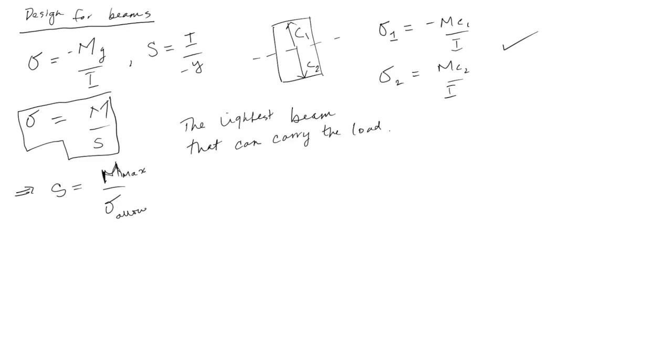you want the section modulus to be efficient such that if the section modulus goes up, that means the allowable stress goes down. And that's what you want. An efficient beam is one where given a constant maximum bending moment, the section modulus is optimized such that the stresses that develop are minimized. I'll say that again. Given a constant maximum bending moment, an efficient cross-section is one where the section modulus is maximized while the stress in the beam is minimized.